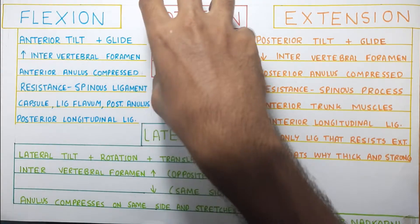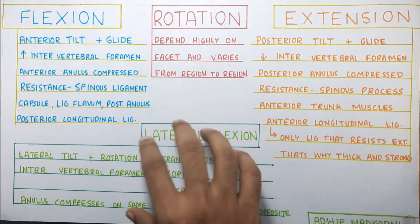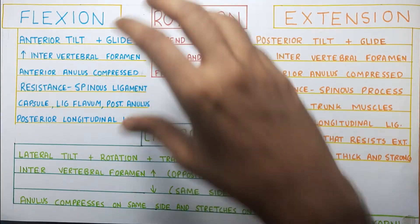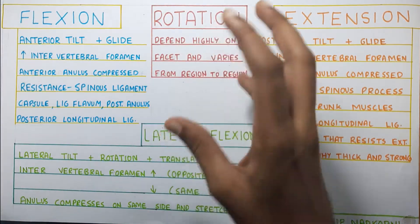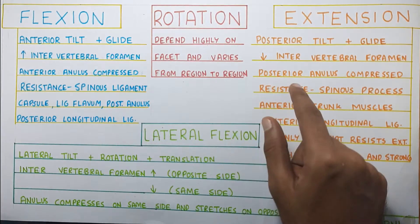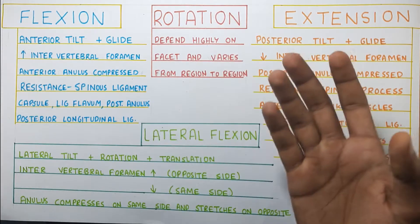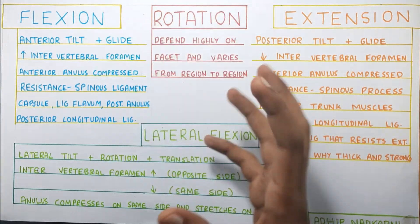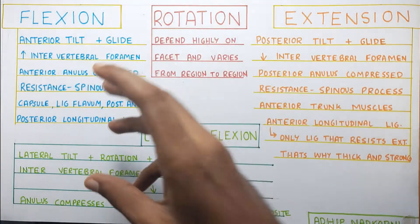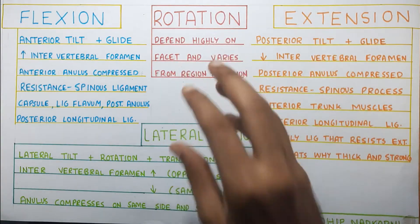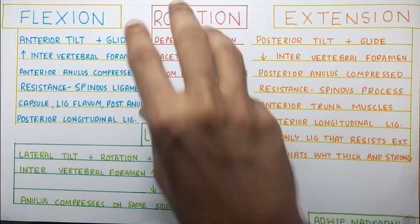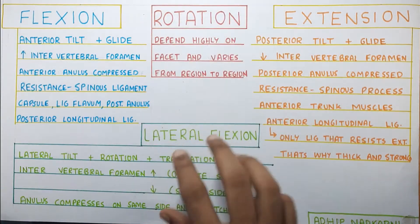Going to the next part — rotation. Rotation is always coupled with lateral flexion. It depends highly on the facet and also varies from region to region because the facet orientation is very different. So rotation is very variable — that is something to keep in mind — and it always occurs as a coupling motion with lateral flexion.